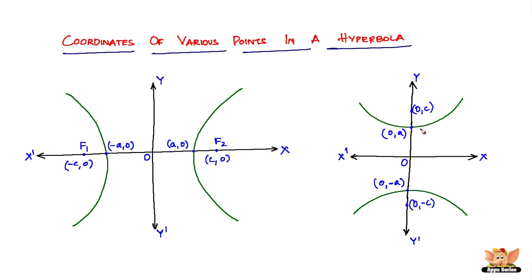Here we are with the other kind of hyperbola that opens upwards and downwards. The coordinates are not very different — it's pretty logical. We've got focus F1 and focus F2, and two vertices.